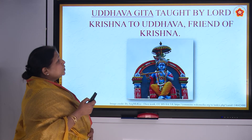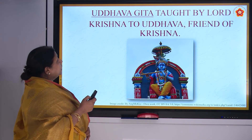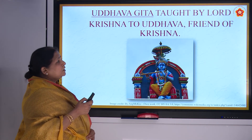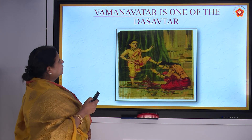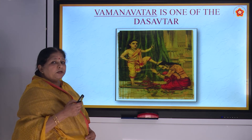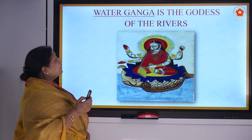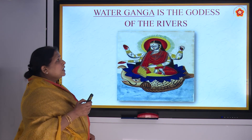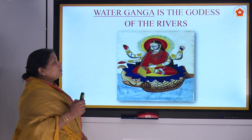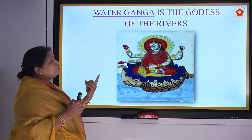U — Uddhava Gita is taught by Lord Krishna to Uddhava, friend of Krishna. V — Vaman avatar is one of the Dashavatars — Vishnu took 10 avatars and Vaman is one of them. W — Water Ganga is the goddess of the rivers; Ganga flows from the head of Lord Shiva.